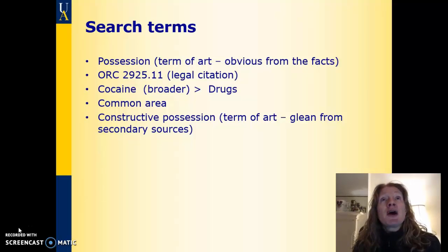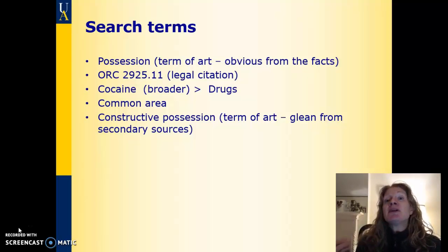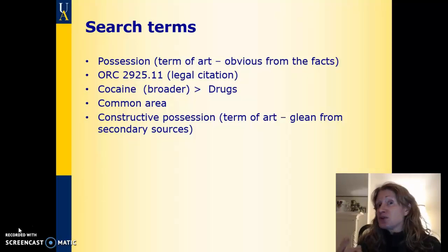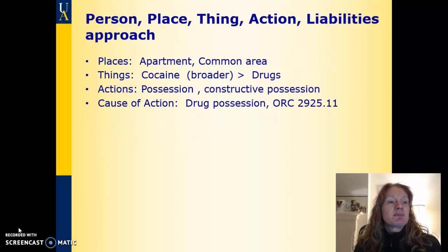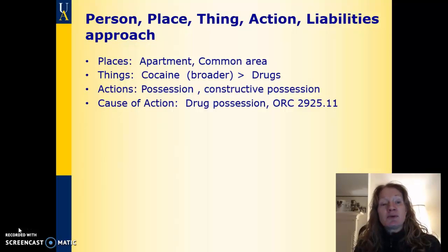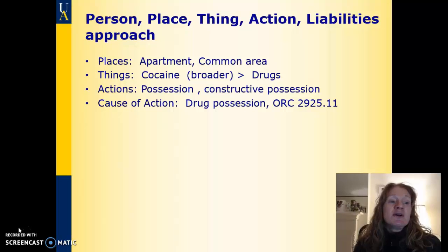The term 'constructive possession' is something you'd find by going to a secondary source, reading up about drug possession, and discovering the concept — constructive possession being when something is not actually on somebody's person but is somehow in their vicinity, such that you can assume they in fact possess the object. Using the person, place, thing, actions, liability approach: places are the apartment common area; things are cocaine or drugs; actions are possession and constructive possession; and the cause of action is drug possession, along with the statute.